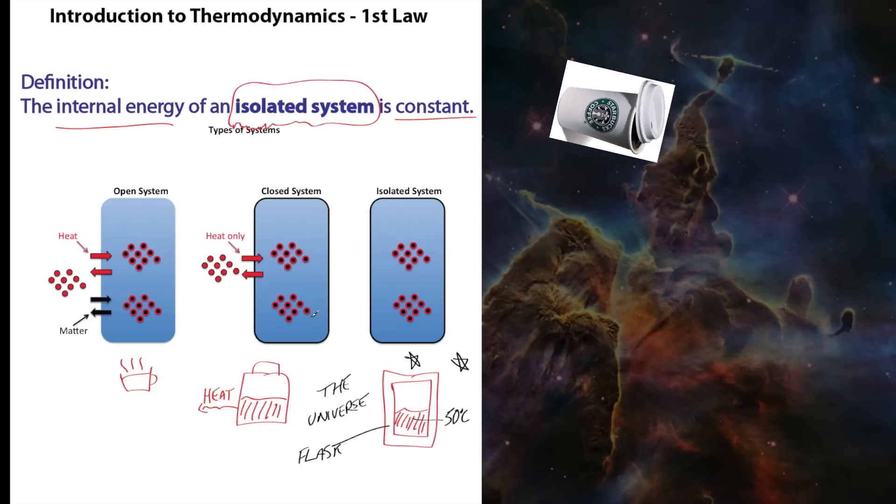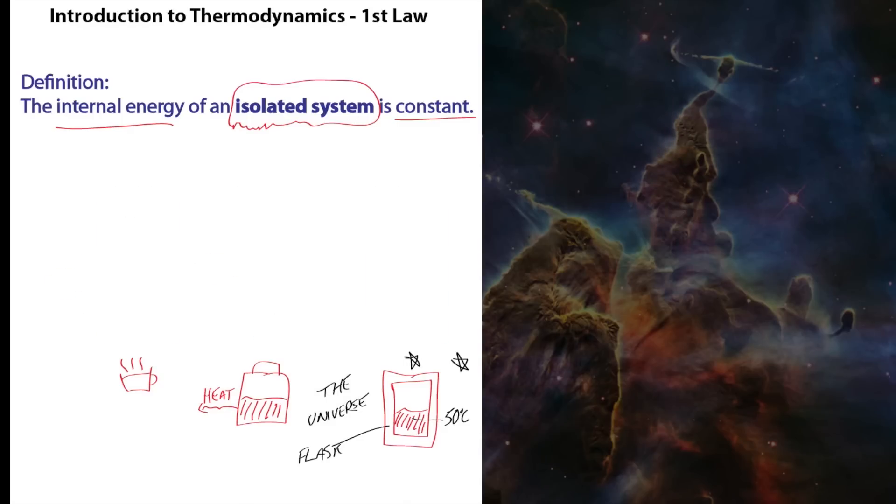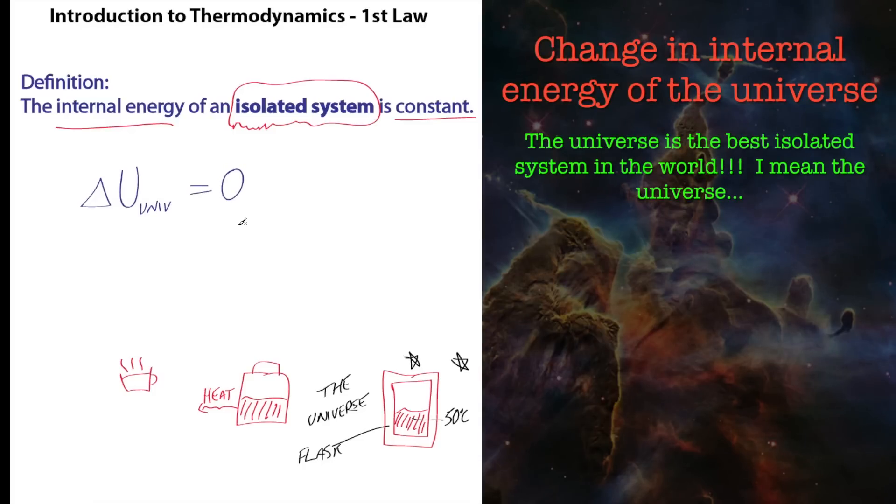What this means really is delta U, the change in internal energy. If the internal energy is constant, the change is going to be zero. But the internal energy of the best isolated system in the universe is the universe. So the change in internal energy of the universe is zero.